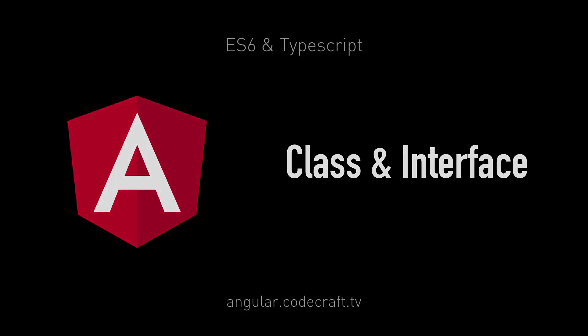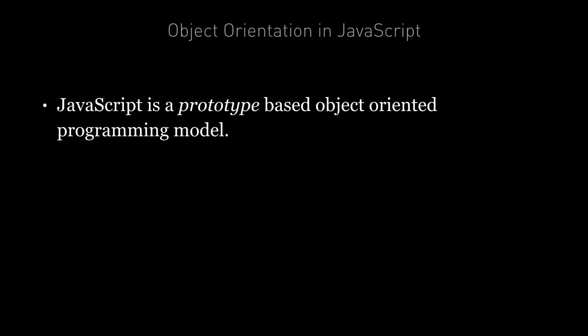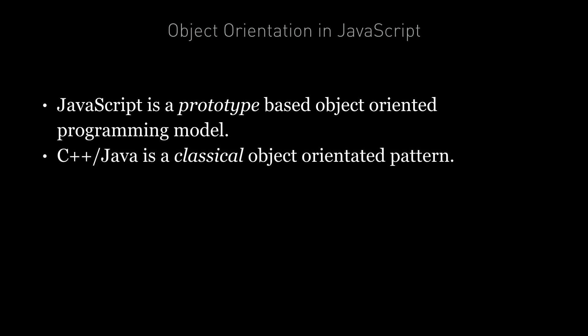How do we write object-oriented code in ES6? JavaScript has a prototype-based object-oriented programming model. It creates objects using other objects as blueprints, and to implement inheritance it manipulates what's called a prototype chain. We normally call the way object-orientation is implemented in other languages like C++ or Java as the classical OO pattern, and the way it's implemented in JavaScript as the prototype pattern.